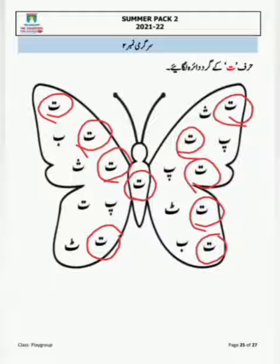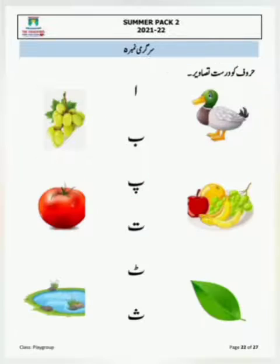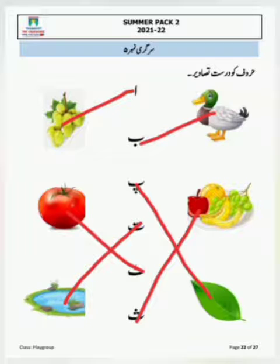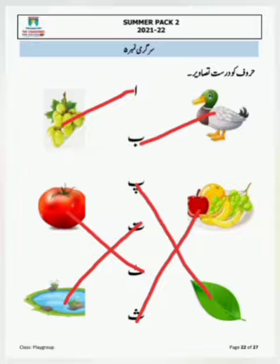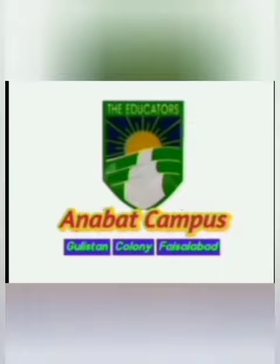صفحہ نمبر بائیس پر آپ نے حروف کو درست تصاویر کے ساتھ ملانا ہے۔ حروف تہجی دیے گئے ہیں: الف، بے، پے، تے، ٹے، سے۔ جیسے: الف — انگور، بے — بطخ، پے — پتہ، تے — تالاب، ٹے — ٹماٹر، سے — سمر۔ امید کرتی ہوں میتھ اور اردو کا سمر پیک سمجھ میں آ گیا ہوگا۔